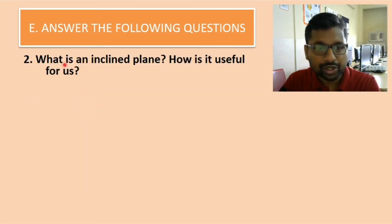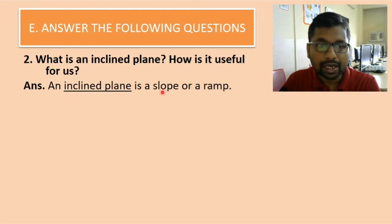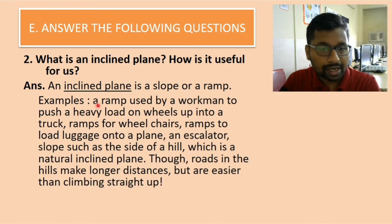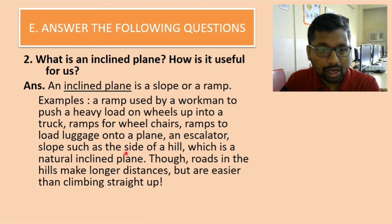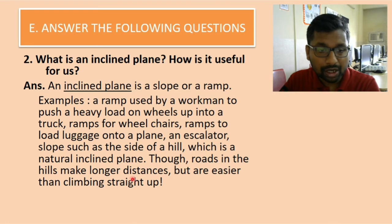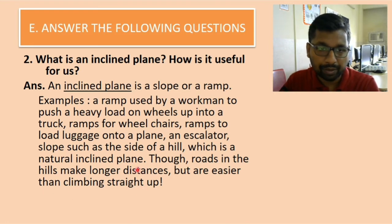Second question: what is an inclined plane and how is it useful for us? An inclined plane is a slope or a ramp. Examples include a ramp used by a workman to push a heavy load on wheels up into a truck, ramps for wheelchairs, ramps to load luggage onto a plane, an escalator, and slopes such as the side of a hill which is a natural inclined plane. Roads in the hills make longer distances but are easier than climbing straight up.